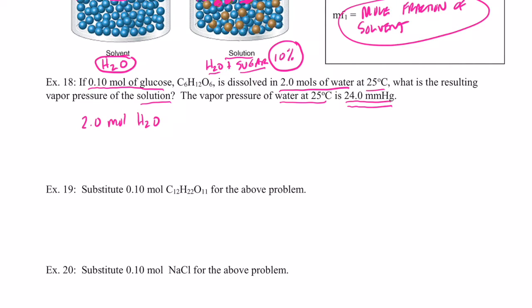Let's find the mole fraction of my solvent. I have 2.0 moles of water. Mole fraction equals moles of the component you're interested in divided by the total moles of solution: 2.0 moles of water divided by (2.0 moles of water + 0.10 moles of C₆H₁₂O₆). So that's 2.0 ÷ 2.1, which gives a mole fraction of 0.95 to two significant figures.